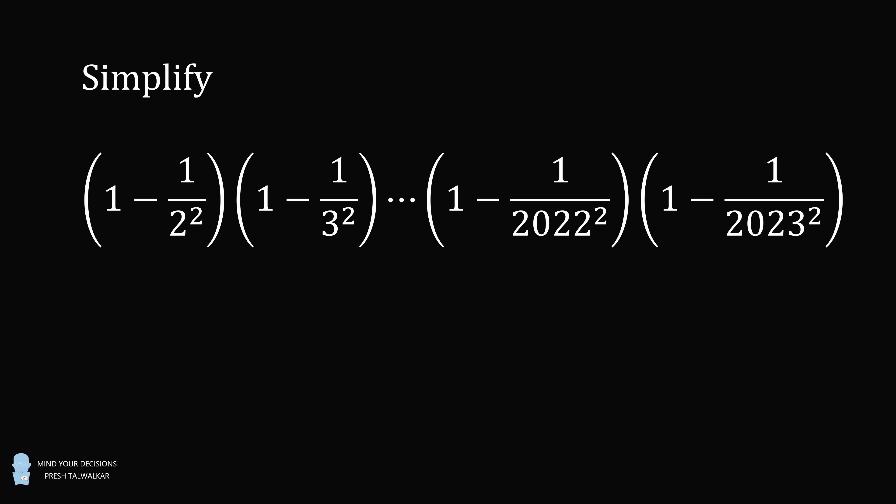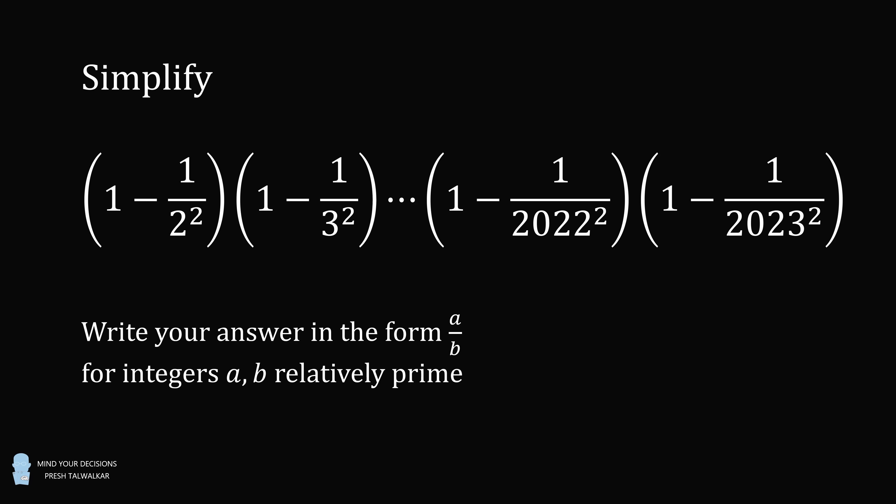The first term is 1 minus 1 over 2 squared. The second term is 1 minus 1 over 3 squared. The pattern continues until the final two terms are 1 minus 1 over 2022 squared, and the final term is 1 minus 1 over 2023 squared. Write your answer in the form a over b for integers a and b relatively prime.